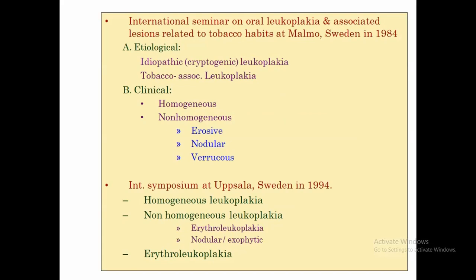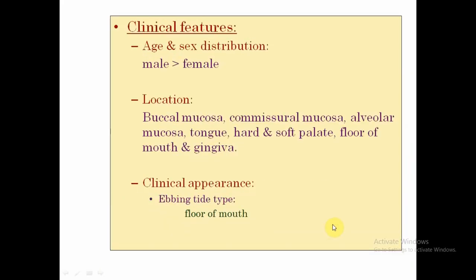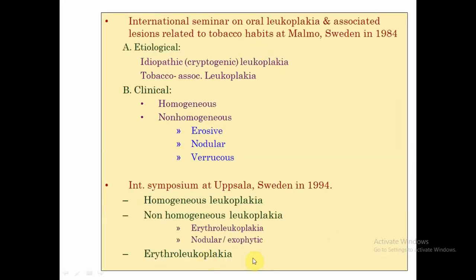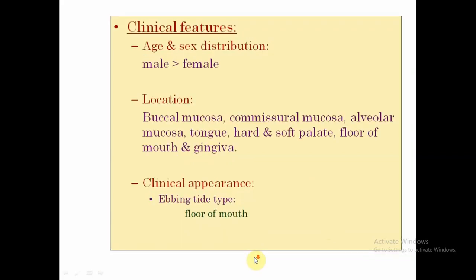Another classification is based on etiology and clinical appearance. Etiologically, it is divided into idiopathic and tobacco-associated Leukoplakia. Clinically, again, there is homogeneous and non-homogeneous. Under non-homogeneous, we have erosive, nodular, and verrucous types. A more recent classification similarly has homogeneous and non-homogeneous subtypes, and includes erythroleukoplakia — a mixture of both Leukoplakia and red areas, with white interspersed with red.